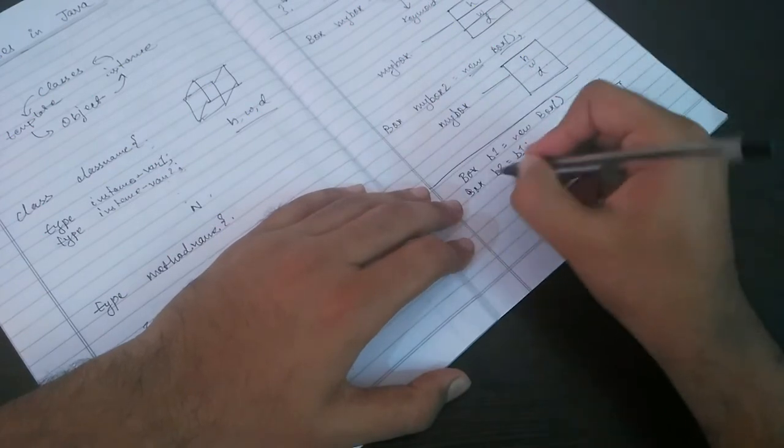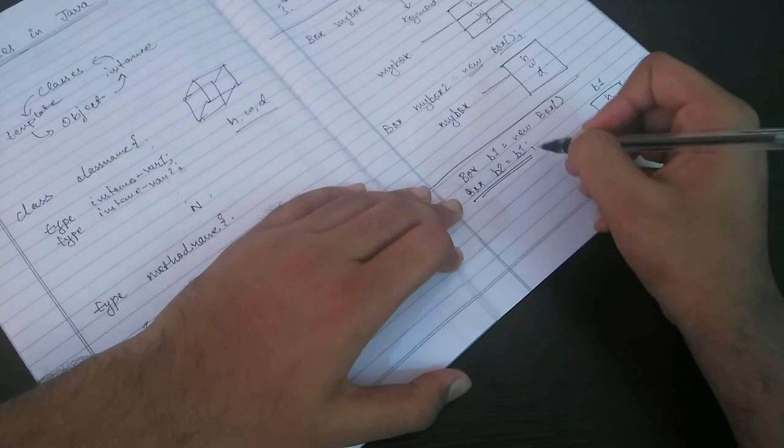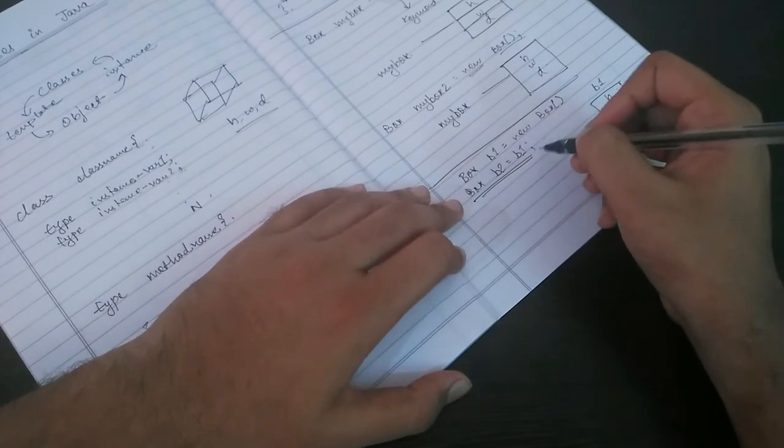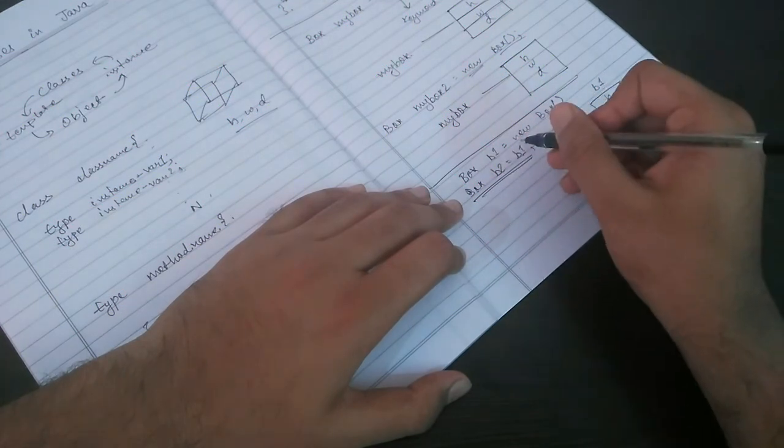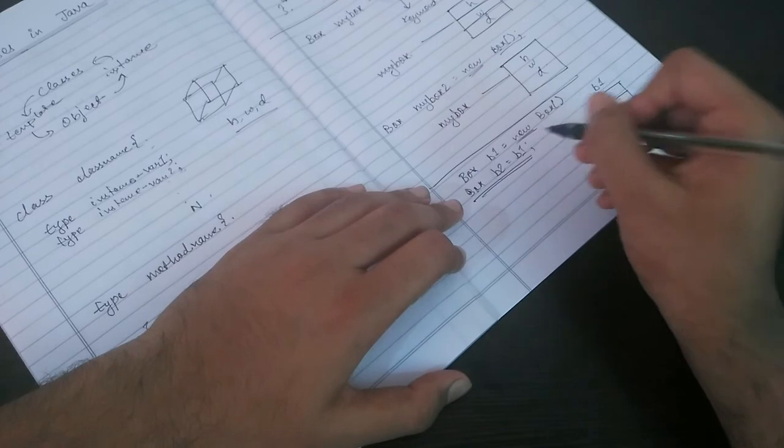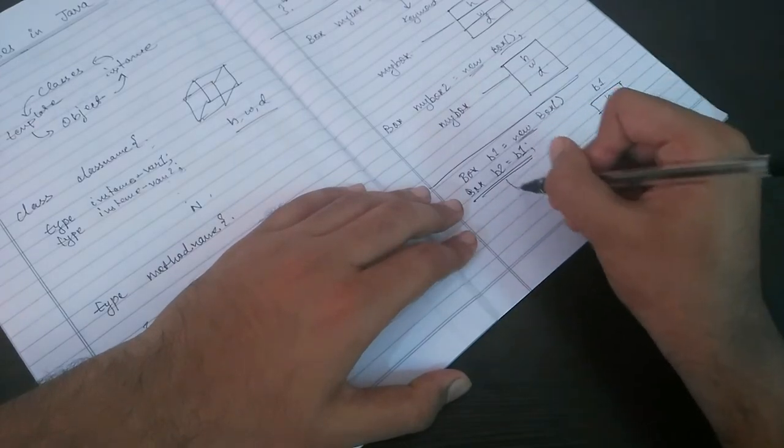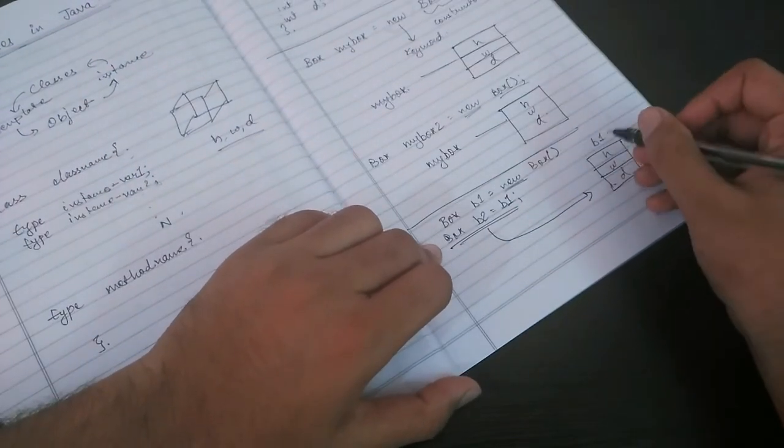Now what this second line will do? This second line will not allocate another memory for this object b2. Why? Because we have not given any keyword 'new' here. So this b2 will again refer to the same memory which is allocated for b1.